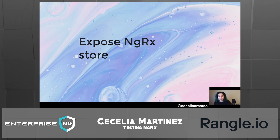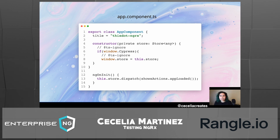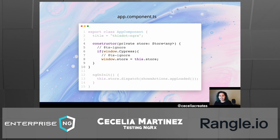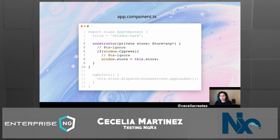The first thing we need to do is expose our NGRX store to Cypress. Within our app.component.ts — this is application code, not test code — in the app component we're exporting, on line four, we're stating that if window.Cypress is present, meaning the application is running in Cypress, we want to expose the store. We set window.store to equal our NGRX store for the application. This allows us to tap into it while running our tests.